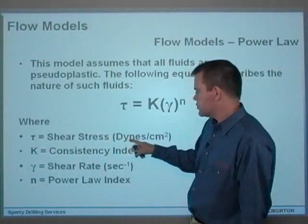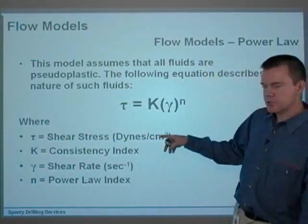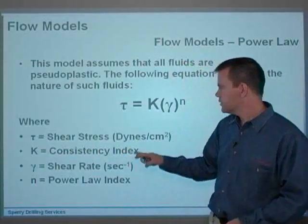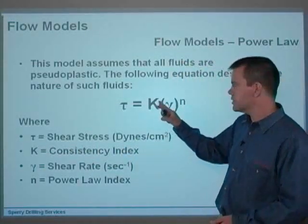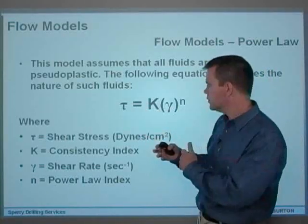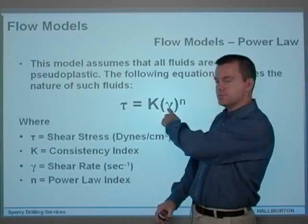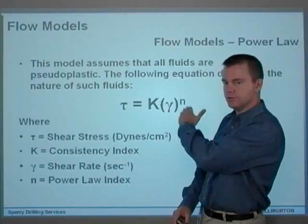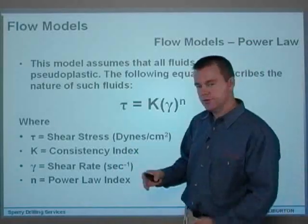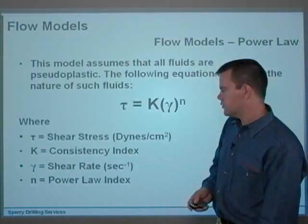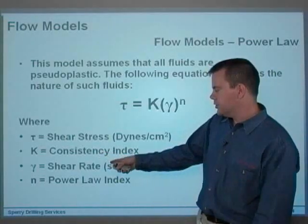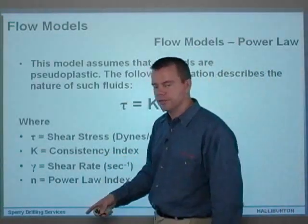We've got τ equals the shear stress, usually in dynes per centimeter squared. K, the consistency index, gives you the slope of the line in the same way as the plastic viscosity PV in the Bingham Plastic model gives you the slope of the line. So it basically gives you what the angle of the line is that you're drawing on the graph. Gamma is basically your shear rate in per seconds again, and n is the power law index.